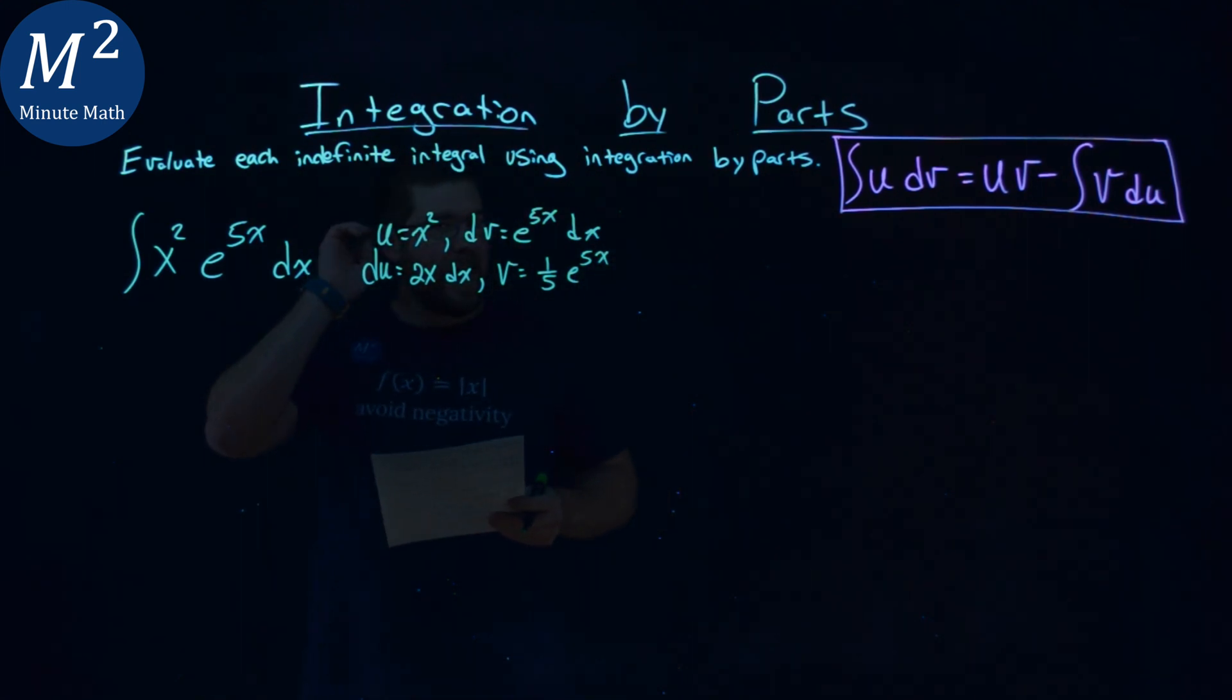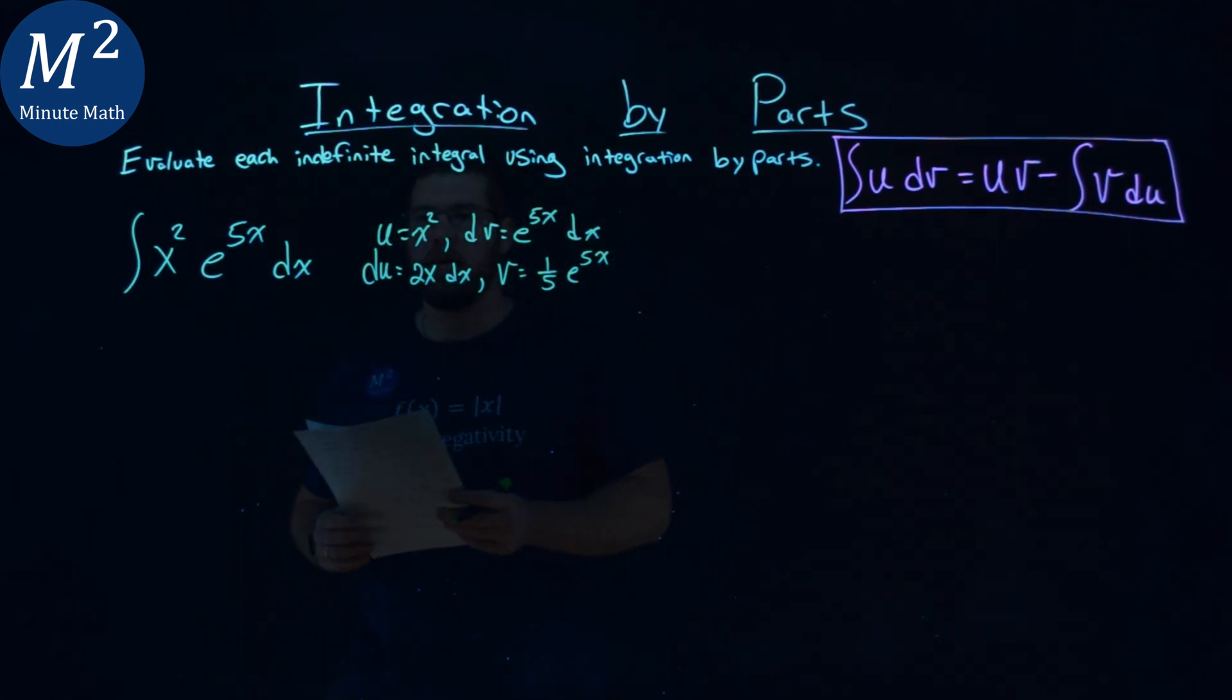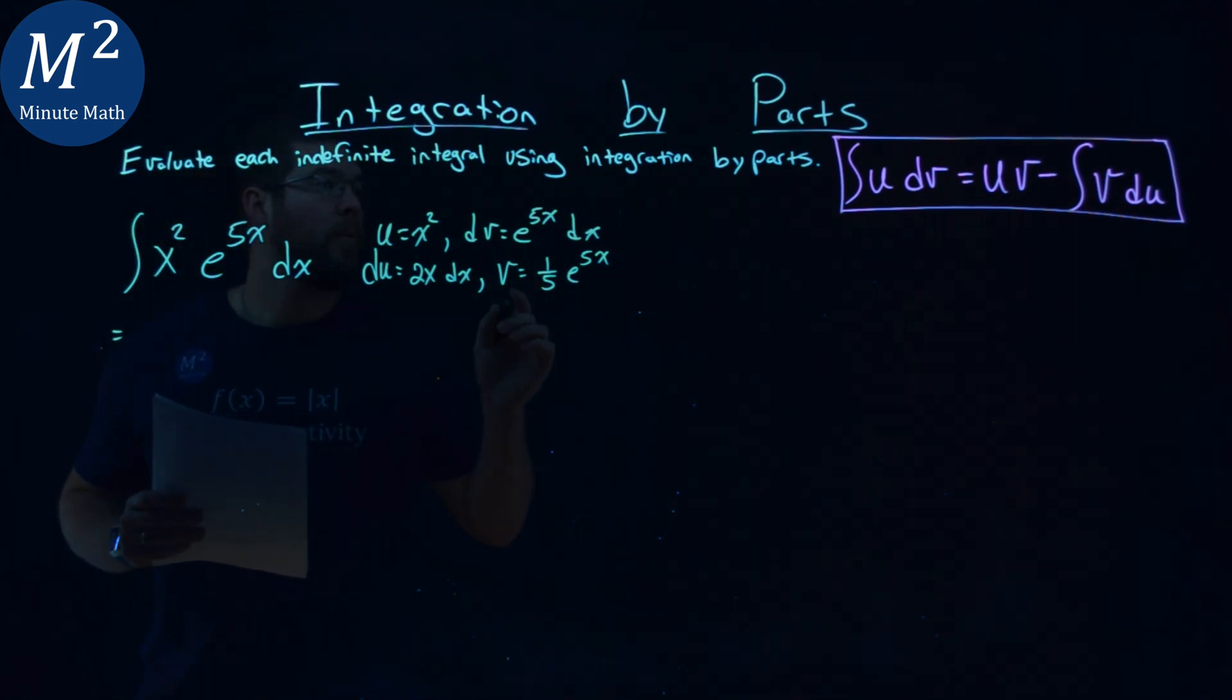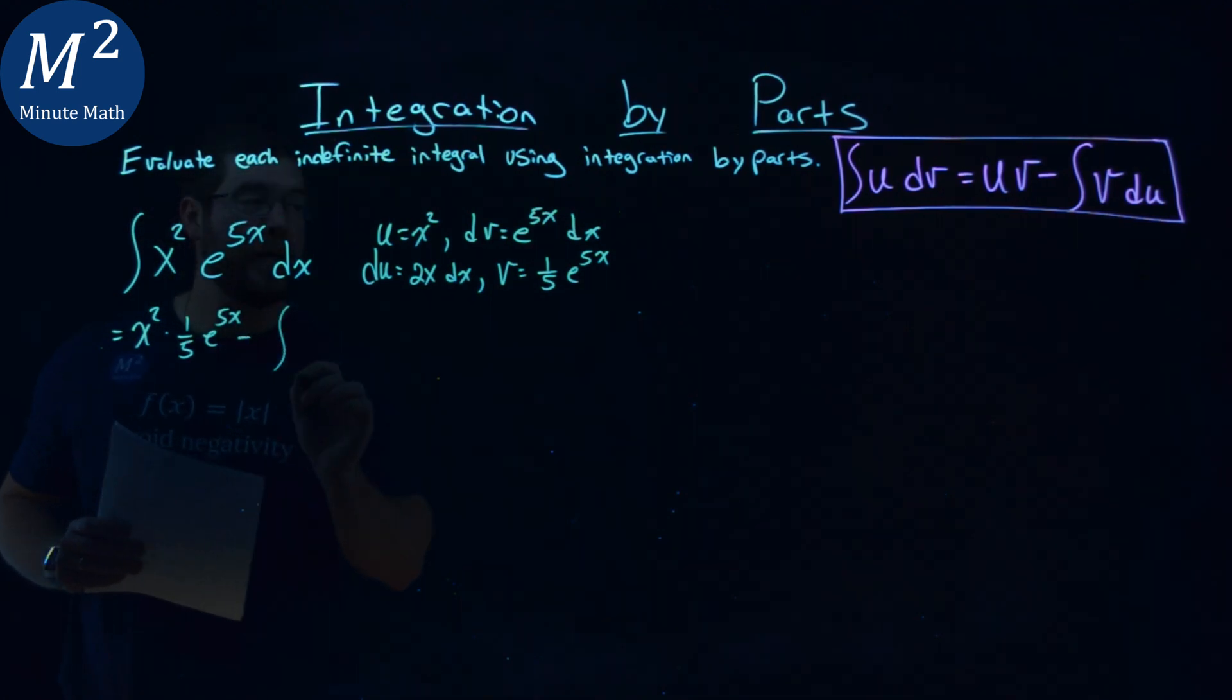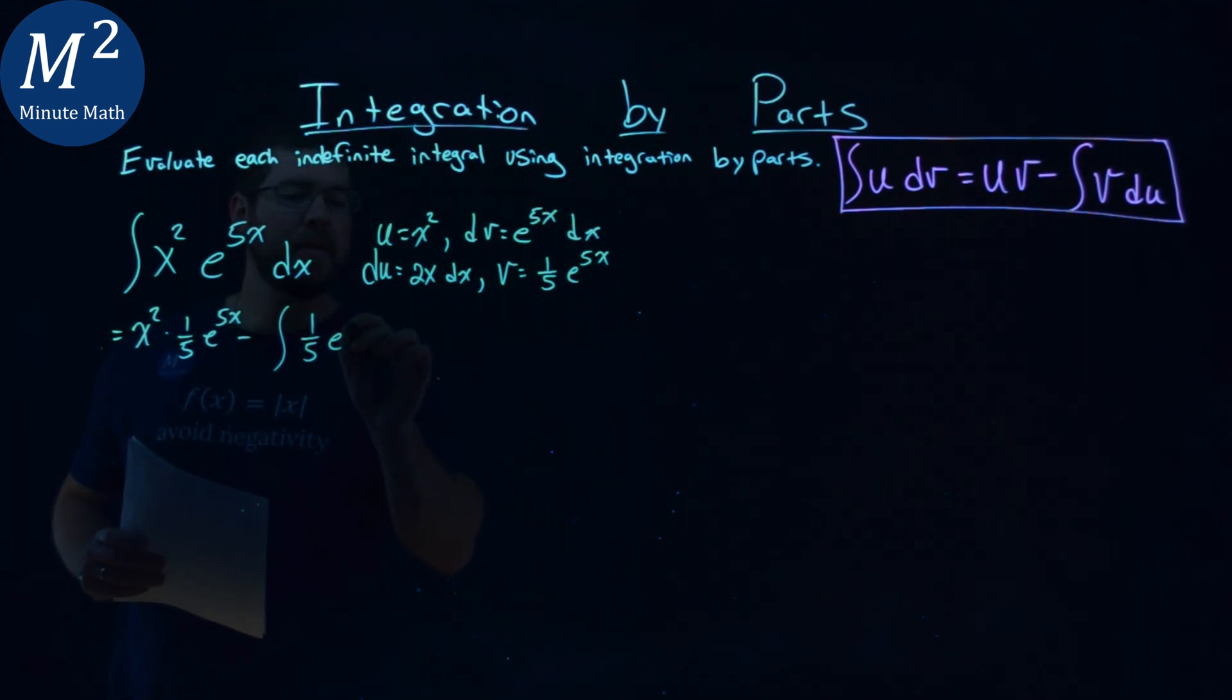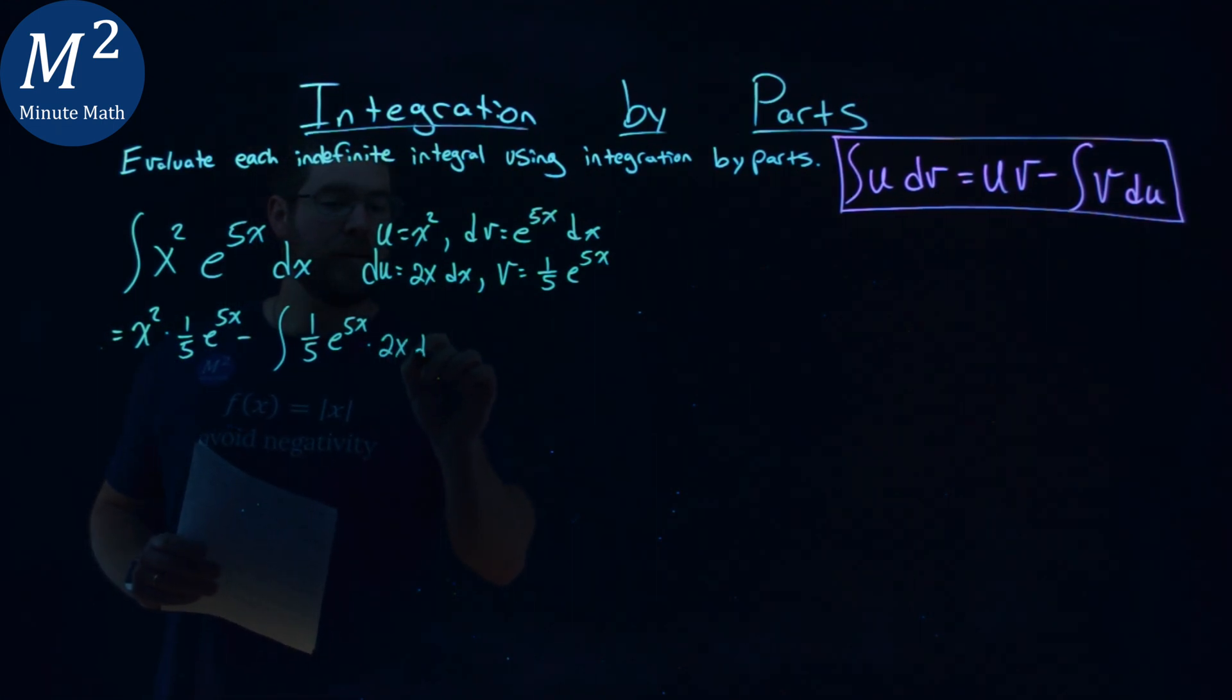Alright, we have everything lined up. Let's apply our formula. We have u times v, so x squared times my v value, one-fifth e to the 5x power, minus the integral of v, one-fifth e to the 5x power, times our du value, 2x dx.